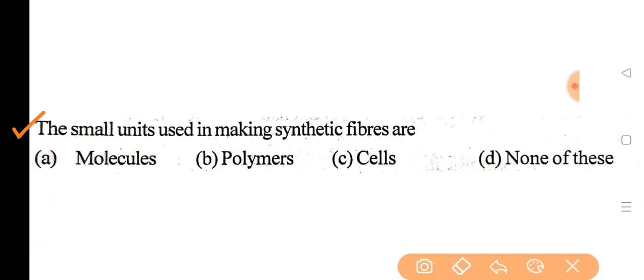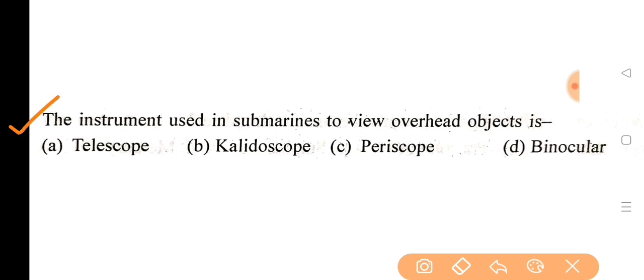Next question: the small units used in making synthetic fibers are? Correct answer is option B, polymers. Next question: the instrument used in submarines to view overhead objects is? Correct answer is option C, periscope.